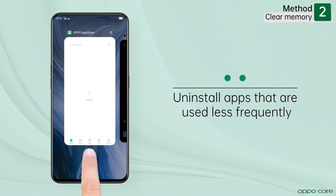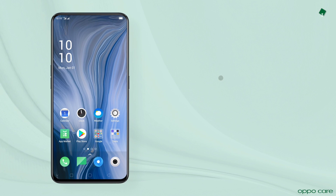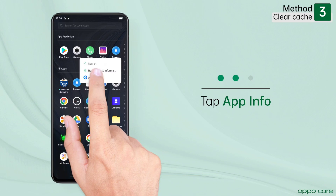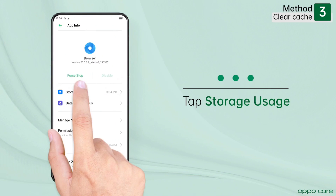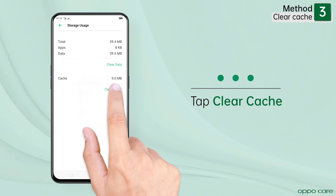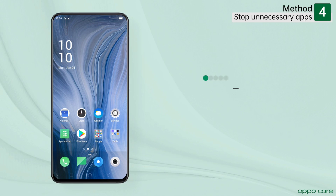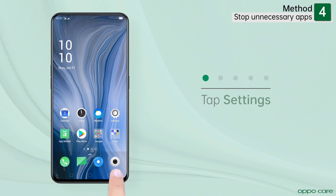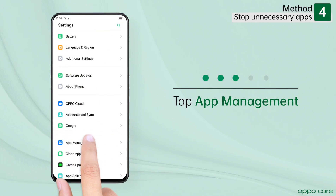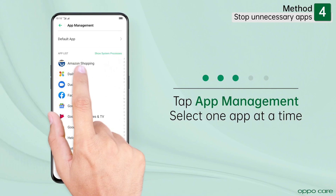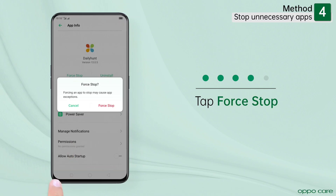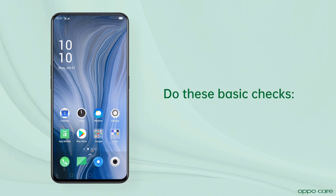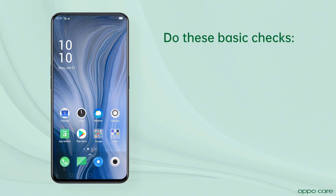Now let's clear cache. Simply long press an app's icon, tap App Info, tap Storage Usage, and then tap Clear Cache. You can also force stop applications that you use very less frequently. For this, tap Settings, tap App Management, tap on an app that you barely use, tap Force Stop, and as the confirmation pop-up opens, tap Force Stop.